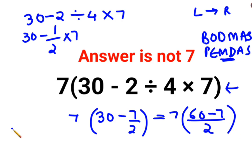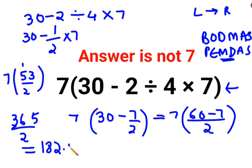So this eventually comes as 7 multiplied by 53 upon 2, which comes out to be 7 into 53, that gets you 15 with 1 carry. 7 into 5 is 35 plus 1 gets you 36, divided by 2. So the answer comes out to be 182.5.